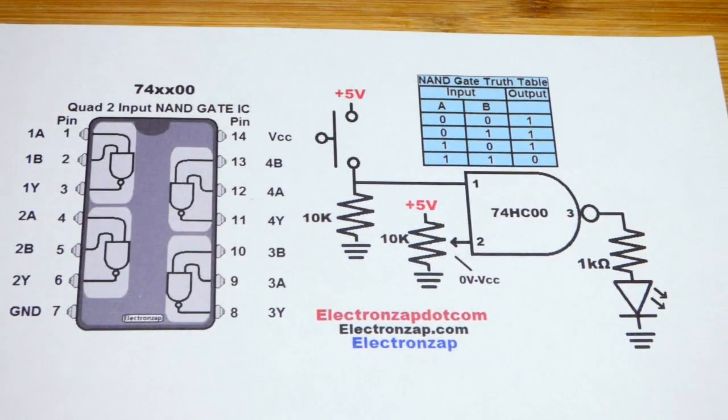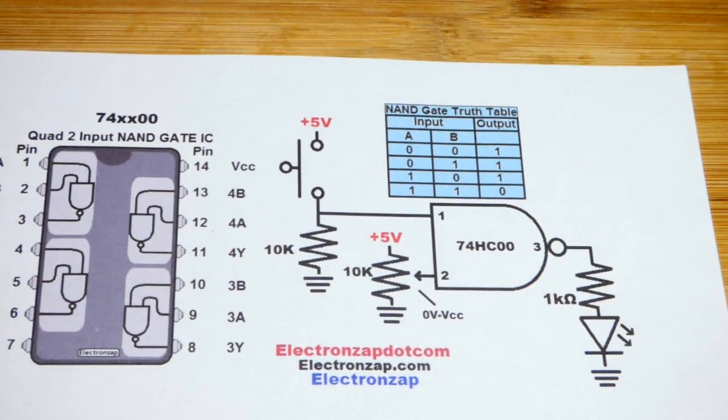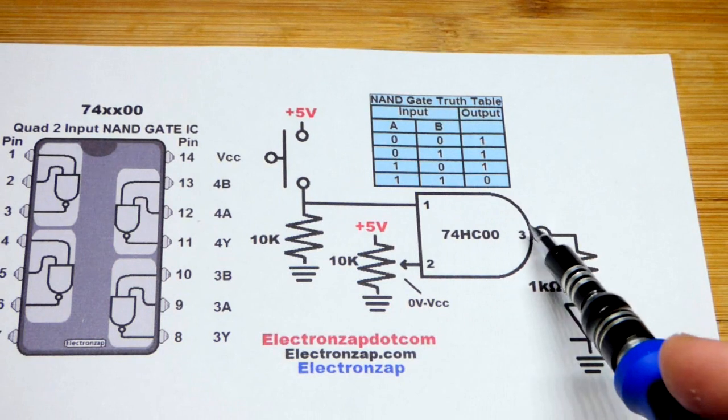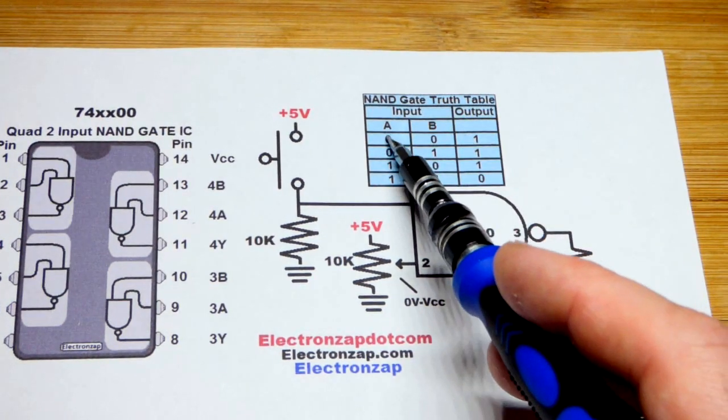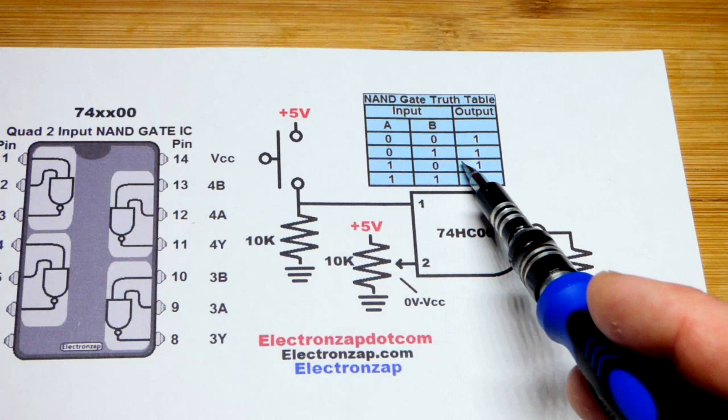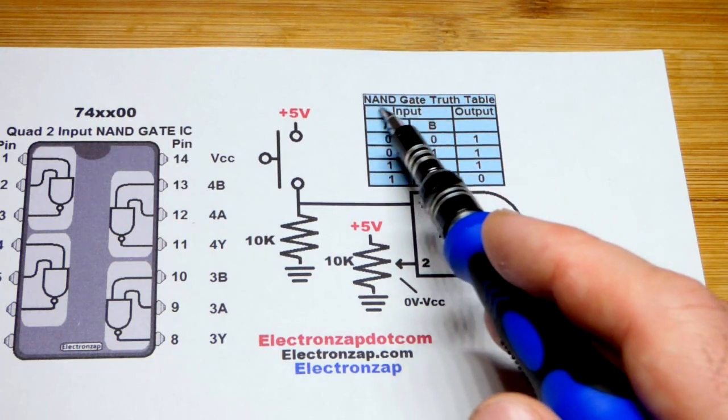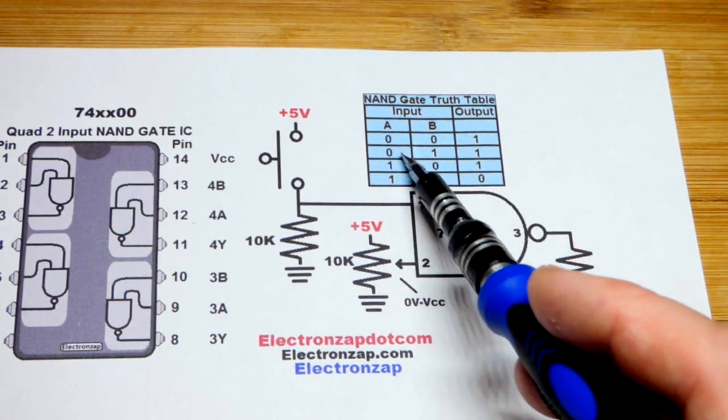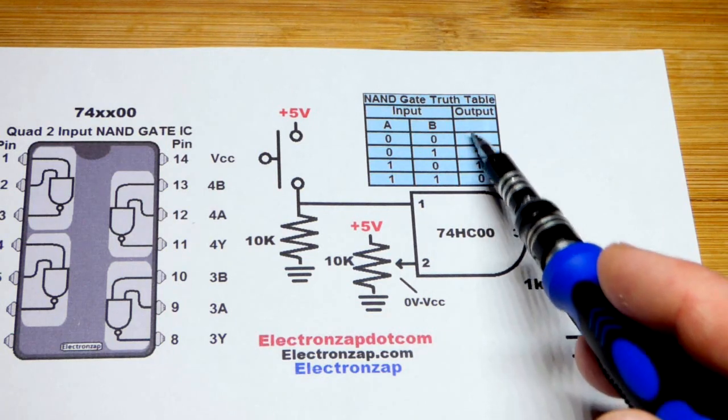So NAND is a not AND gate. It's like an AND gate, except the output is inverted. So with the AND gate, if any inputs were low, then the output was low. But here you can see with the NAND gate, if any inputs are low, then the output is high.